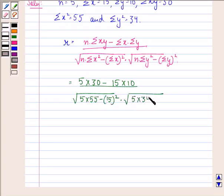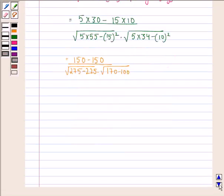This simplifies to 150 minus 150 divided by square root of 275 minus 225, multiplied by square root of 170 minus 100, which equals 0.